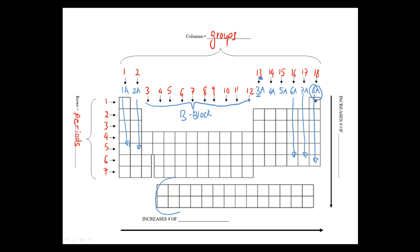As you go down the periodic table — period 1, period 2, period 3, period 4 — the number of electron shells increases. First period: one shell. Second period: two shells. Third period: three shells. Then four shells, five shells, and six shells.